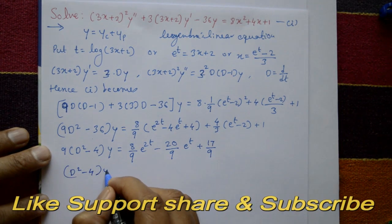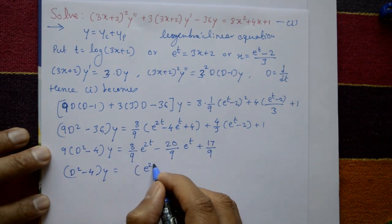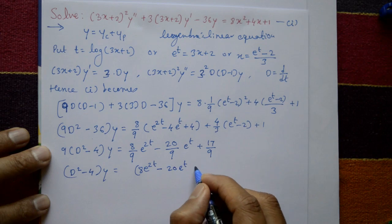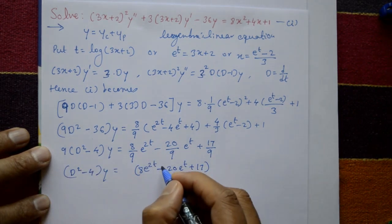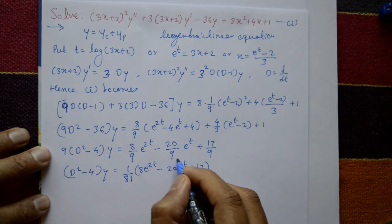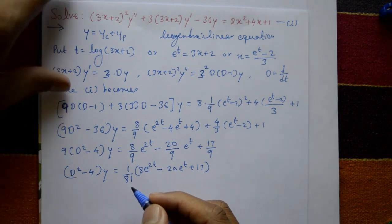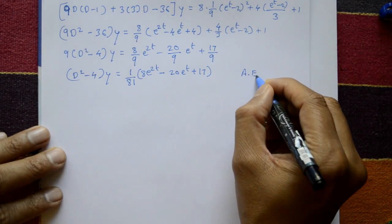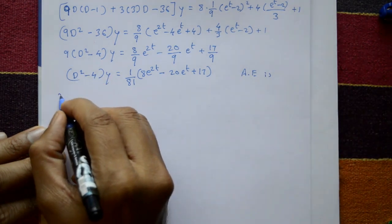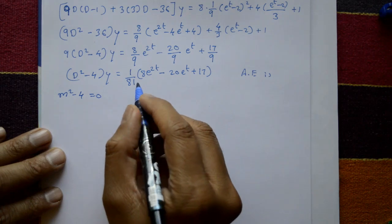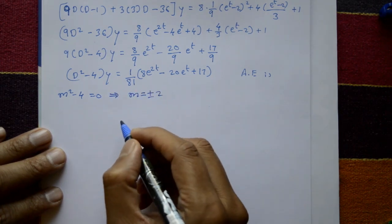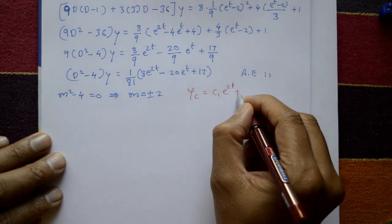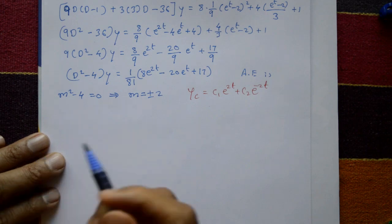So the equation becomes (D² - 4)y = (1/81)(8e^{2t} - 20e^t + 17). The auxiliary equation is m² - 4 = 0, giving m = ±2. Since roots are distinct, the complementary function is yc = c₁e^{2t} + c₂e^{-2t}.